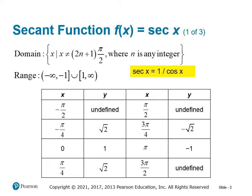Let's think about what the secant function is. Remember that secant is 1 over the cosine function. Since cosine is in the denominator, wherever cosine is 0 — which is at π/2 (90 degrees) and 3π/2 (270 degrees), which is the same reference angle as negative π/2 — the secant is going to be undefined.